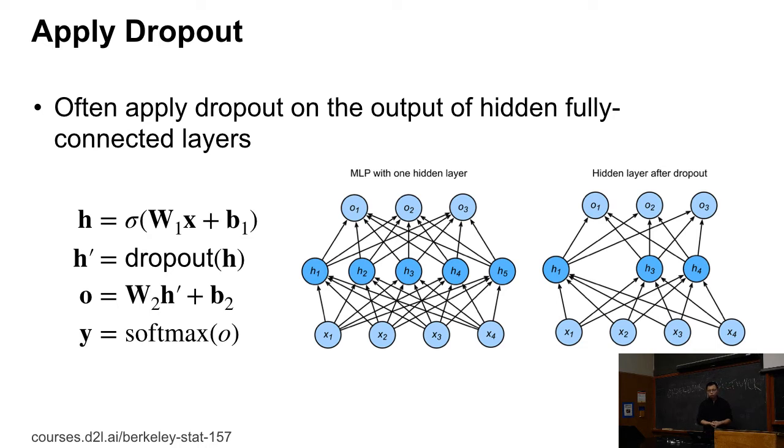In particular, what it works like is: if h is the output of a hidden layer, which means we multiply W times x plus bias and apply the activation, then we apply dropout to h to get h prime, and h prime is fed to the next layer.